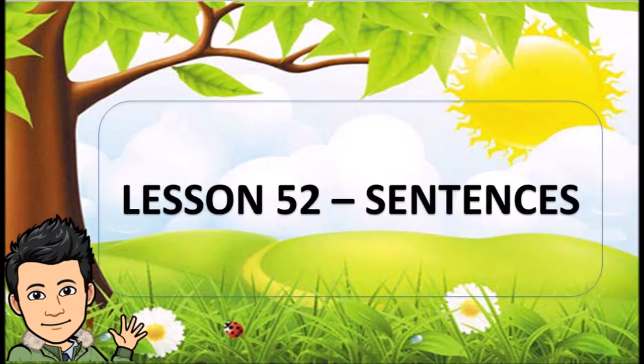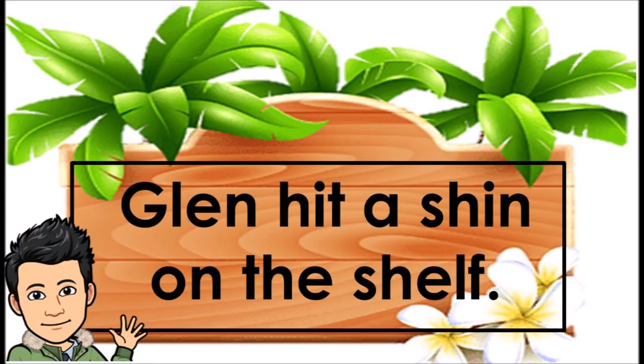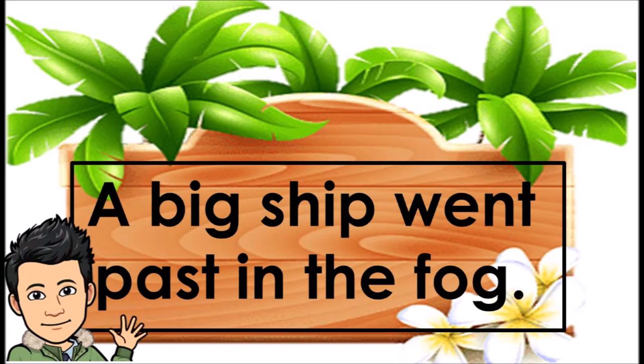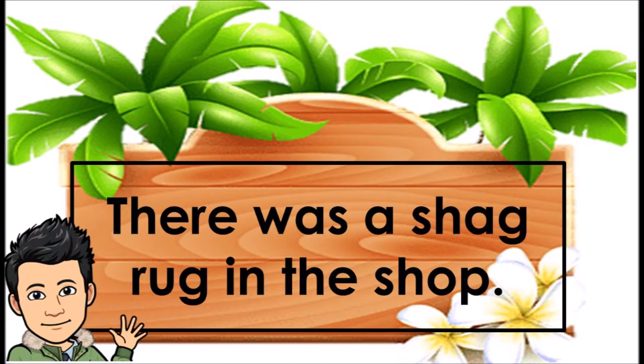Lesson 52 Sentences. Glenn hit a shin on the shelf. Stan shut the lid on the bin. A big ship went past in the fog. There was a shag rug in the shop.